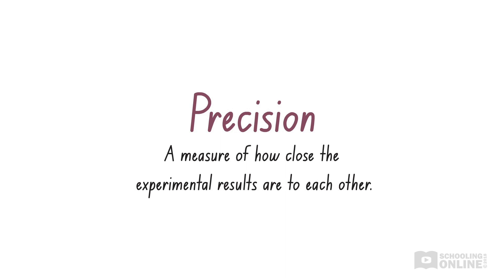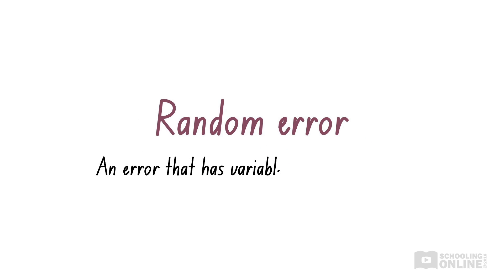Even if we have performed our experiment correctly, we might get slightly different results each time. This may be a result of random errors. A random error is an error that has variable size and direction. That is, random errors affect experiments in unpredictable ways.